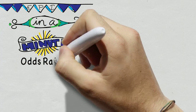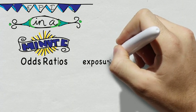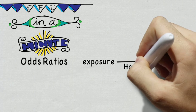Welcome to Epi in a Minute. Today we're talking about odds ratios, which tell us how strongly an exposure is linked to a disease.